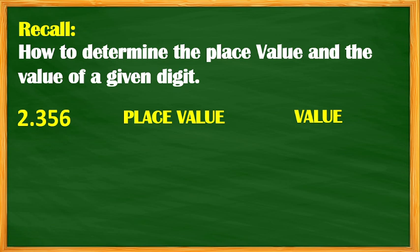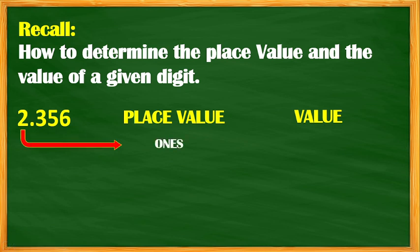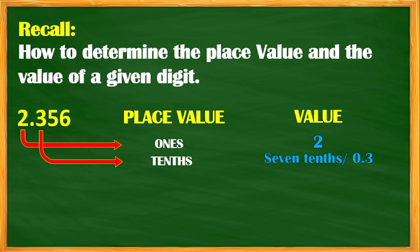Now, let's recall how to determine the place value and the value of the given digit. For example, we have 2 and 356 thousandths. Let's determine the place value and the value. First, we have 2 — the place value is ones and the value is 2. Then 3 — the place value is tenths and the value is 3 tenths, not 7 tenths. 3 tenths.